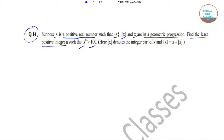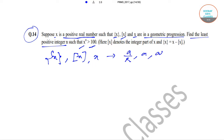It has been given that fractional part of x, greatest integer part of x, and x are in geometric progression. We'll represent the fractional part of x, greatest integer of x, and x as a/r, a, and ar respectively. We know that x is equal to greatest integer of x plus fractional part of x, so that implies ar equals a plus a/r.